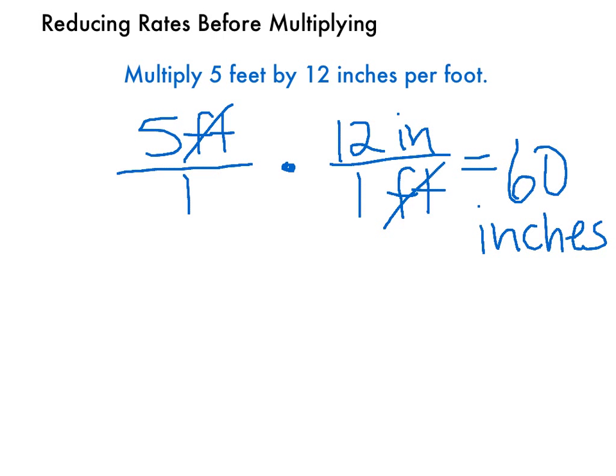In this problem, we cancel units because we're converting one unit to another. In this case feet to inches. So we've shown two instances in which we cancel units. The first, when we're multiplying a rate by another measurement. And the second, when we're converting one unit to another.